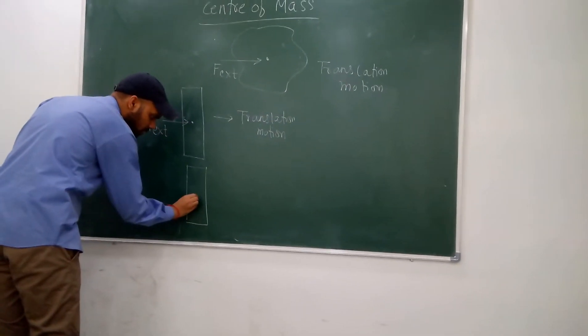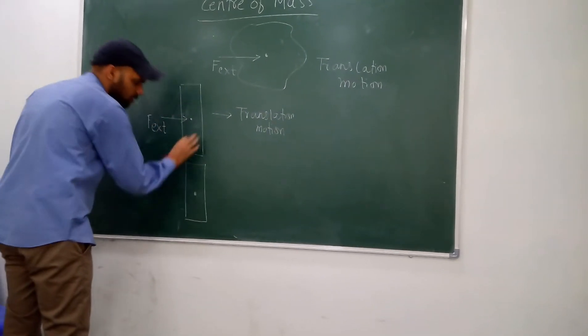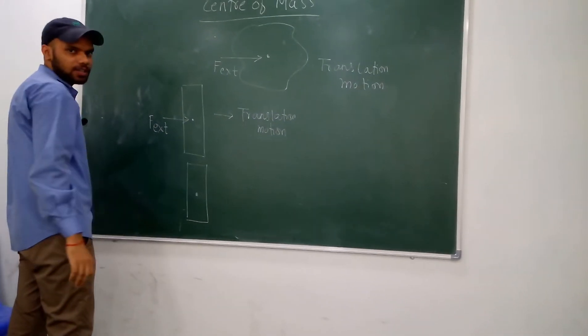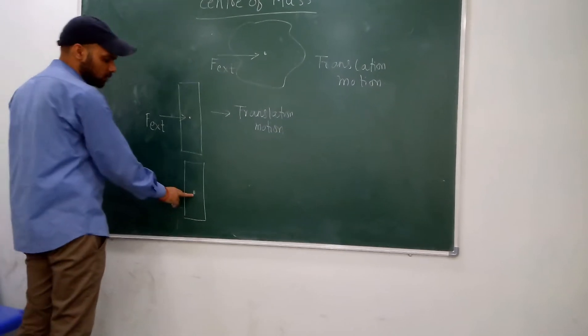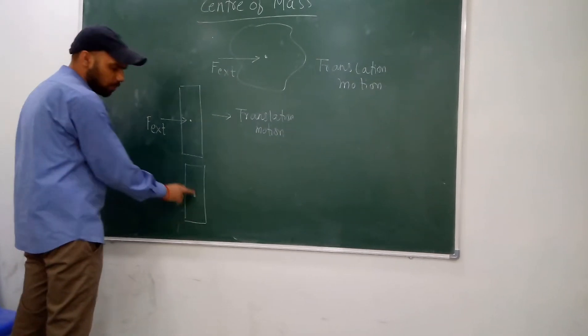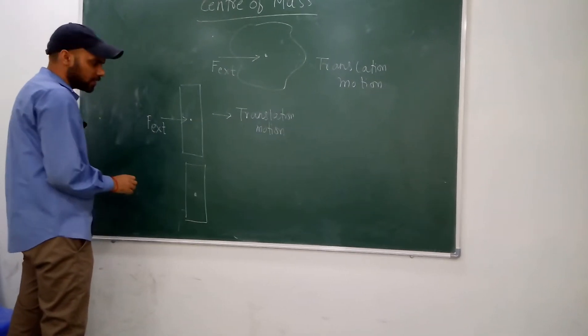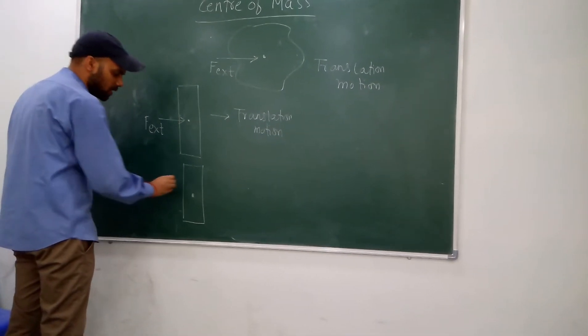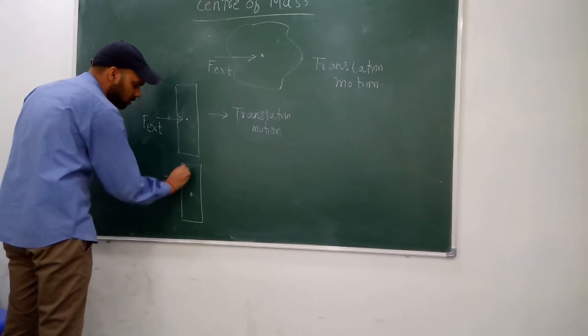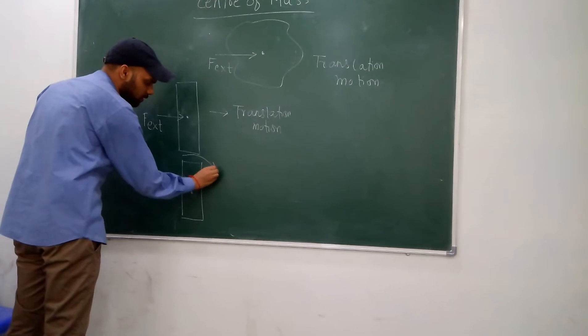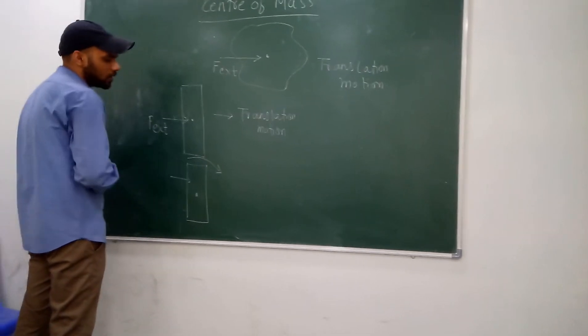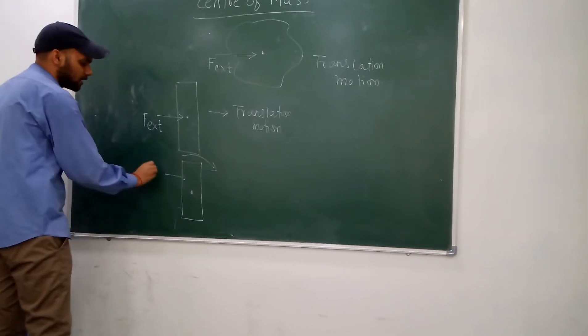Suppose the center of mass of this uniform mass density body is at this point. If you apply a force other than at the center of mass, then that body will also start rotating in this direction.